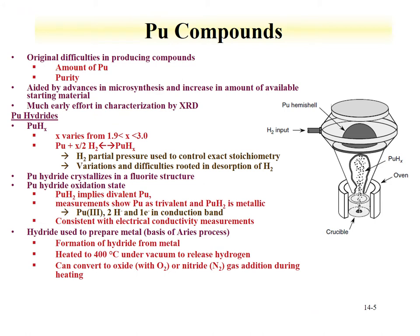Now that we've discussed plutonium metal, we can begin evaluating plutonium compounds. There was originally a difficulty in producing plutonium compounds mainly for two reasons: it was hard to get plutonium, and once obtained, the purity was not certified. Developing plutonium compounds has been aided by microsynthesis, and much early effort on compounds was characterized by X-ray diffraction.